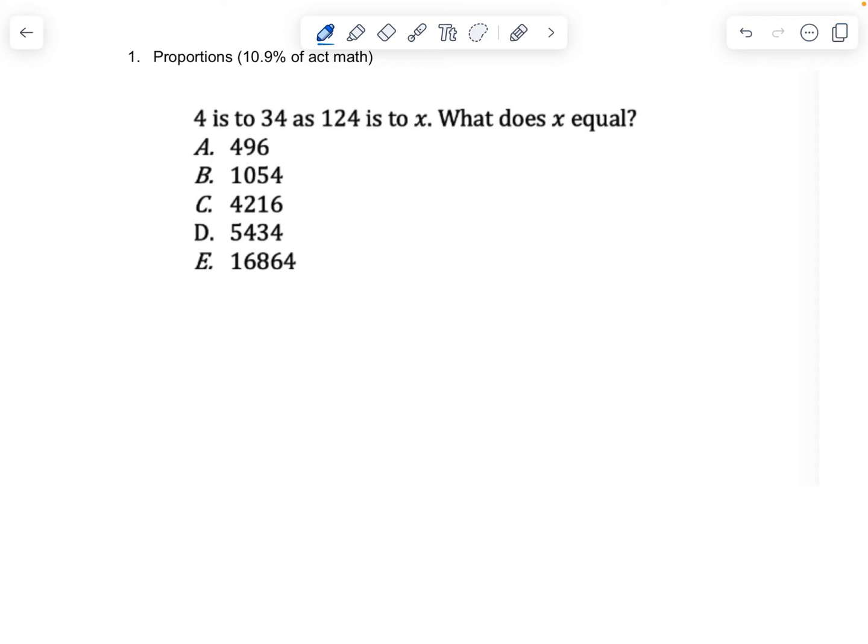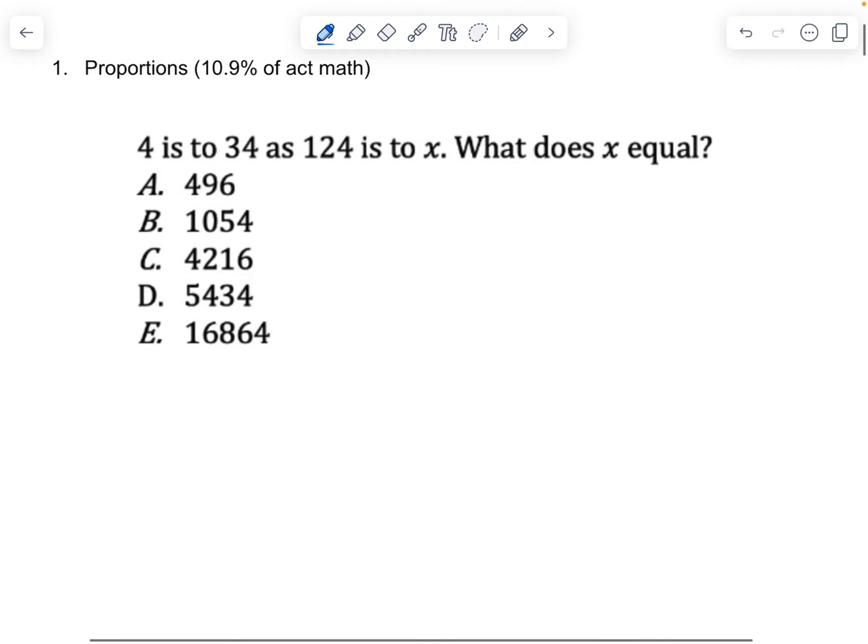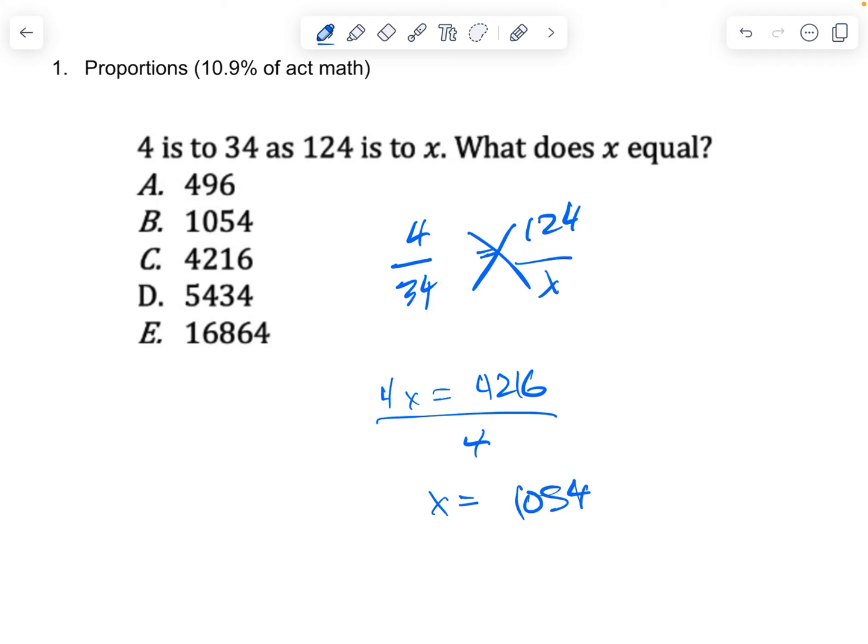First problem. 4 is to 34 as 124 is to x. What does x equal? You're just gonna do cross multiply divide. 4x is equal to 124 times 34. I believe that's 4216. Divide both sides by 4, x equals 4216 divided by 4 is 1054. Just got to set up the proportion. The 1, 2, 3, 4 go in the spots like this when you get an expression like this.